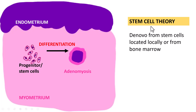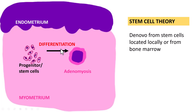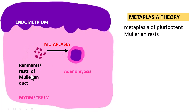The last is the stem cell theory, where there is differentiation of endometrial glands and stroma de novo from stem cells. These stem cells can be located locally in the myometrium or derived from the bone marrow. In the stem cell theory, progenitor stem cells differentiate into endometrial glands and stroma — in contrast to the metaplasia theory, where Müllerian duct remnants undergo metaplasia to form endometrial glands and stroma.